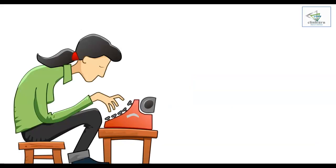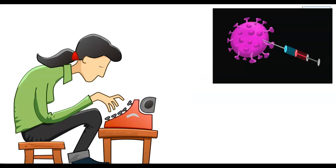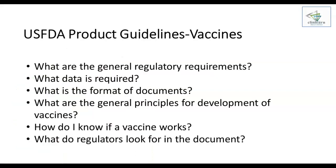Let's assume you have a medical writing project on a vaccine, and specifically you will have to develop documents for marketing approval. How will you start your preparation for this project? Let's list them down: What are the general regulatory requirements? What data is required? What is the format of documents? What are the general principles for development of vaccines? How do I know if a vaccine works? What do regulators look for in the document? There could be these or other questions.